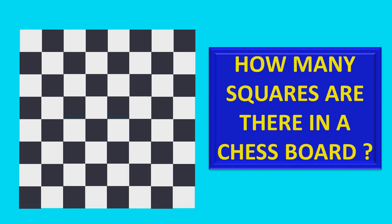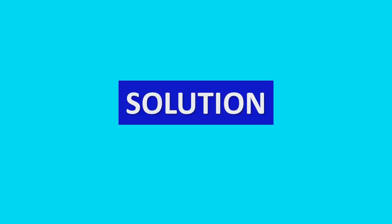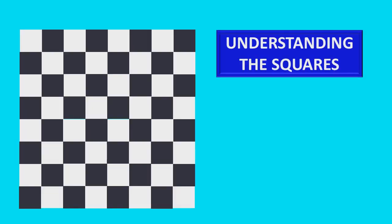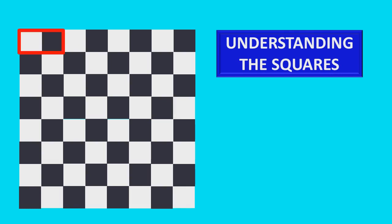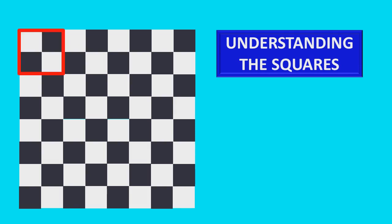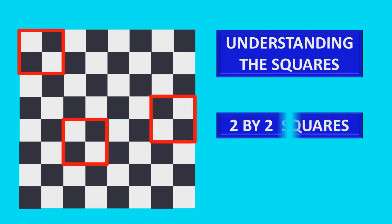Now, the solution is: first, we have to understand the squares. These single squares are known as individual squares. Two single squares do not make a square, so we need four single squares. There are so many squares in this pattern. This type is known as 2 by 2 squares.